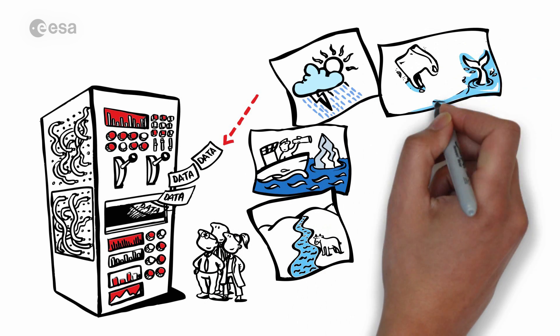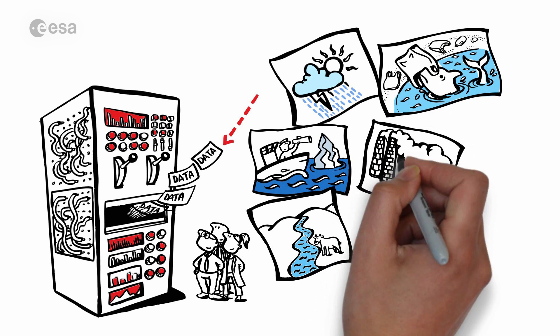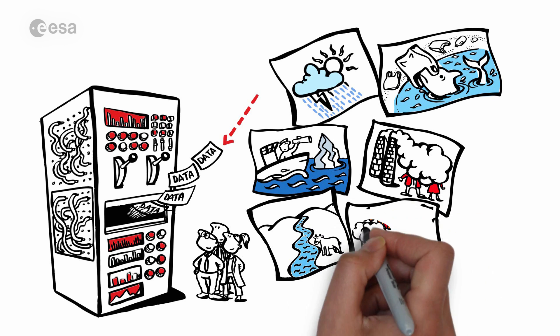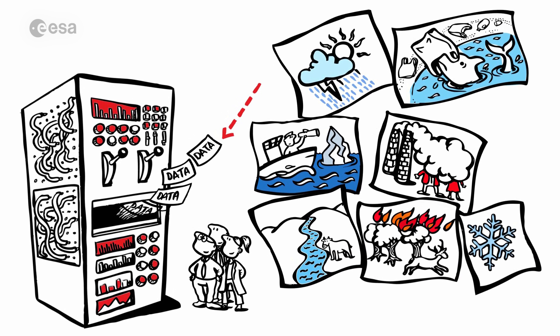It will observe the water quality in coastal environments, as well as the pollution in the atmosphere. And in addition, it will detect forest fires on land and measure the decrease of snow, glaciers and ice sheets on a global scale.